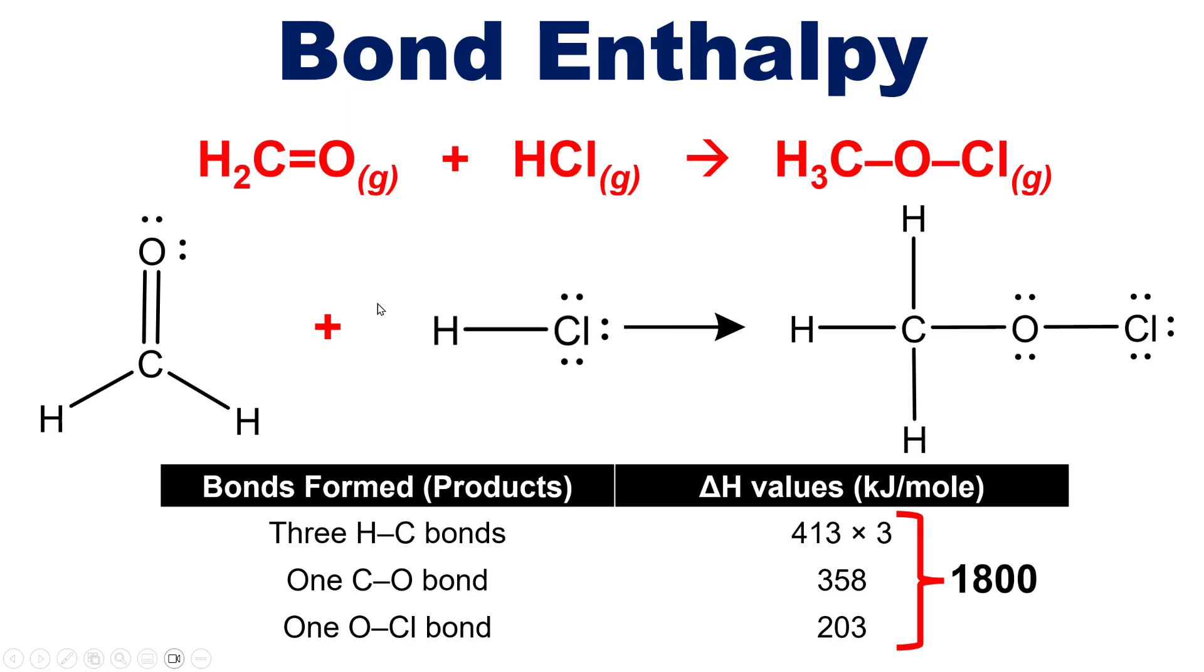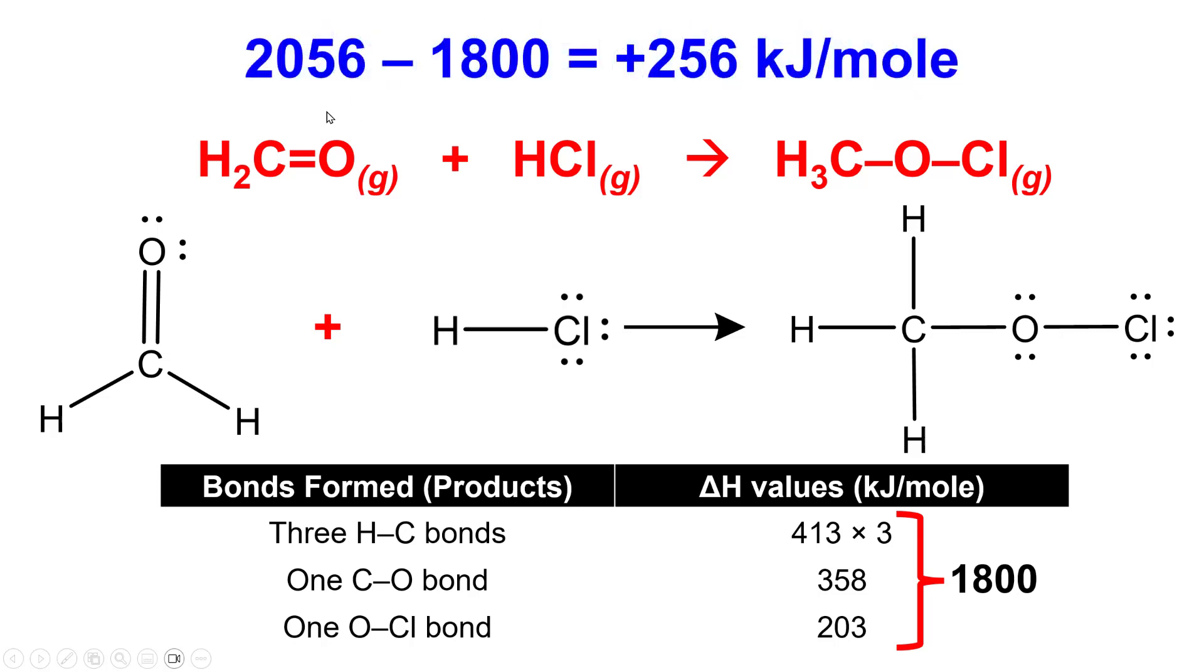To review then, the total value for all the enthalpies of my reactants was 2056 kJ, and for my products was 1800 kJ. To get to the final answer then, I take my reactants, that is my bonds broken, and subtract from that my products, that is my bonds formed. So the final answer ends up being 2056 minus 1800, giving us positive 256 kJ per mole.